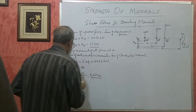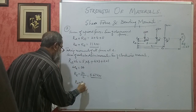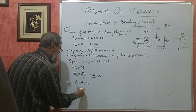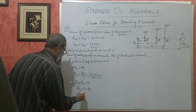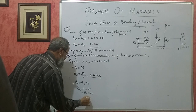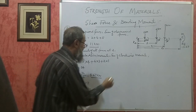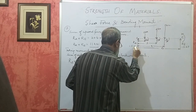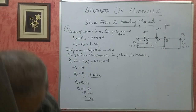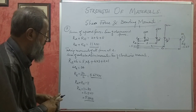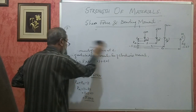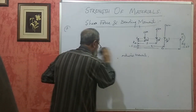So we have found Ra as 5.33 kilonewton and Re as 5.67 kilonewton. This is the first thing we have to do in a simply supported beam before calculating SF and BM — find the reactions. The sum of upward forces must equal downward forces, then take moments at one of the unknown points. Sum of clockwise moments must equal sum of anti-clockwise moments.